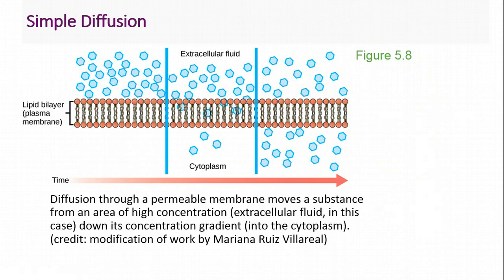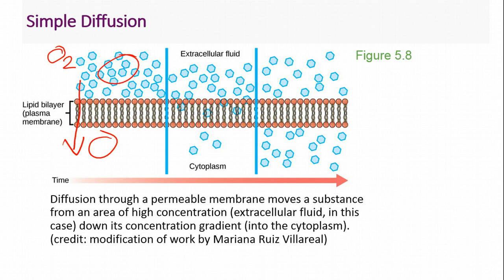Let's imagine we have a molecule — oxygen — outside this bilayer membrane. It is a very small nonpolar molecule, so it will diffuse across. We have a lot of oxygen outside the cell and none inside the cell — this is called a concentration gradient. Diffusion through a permeable membrane moves a substance from an area of high concentration to an area of low concentration, and this happens over time. Some molecules move across, but we still have more outside than inside.